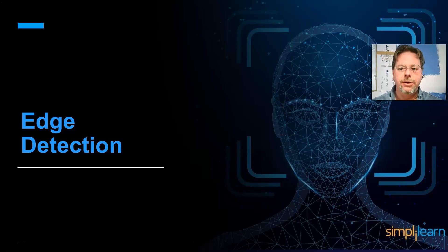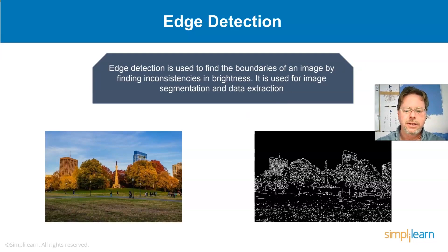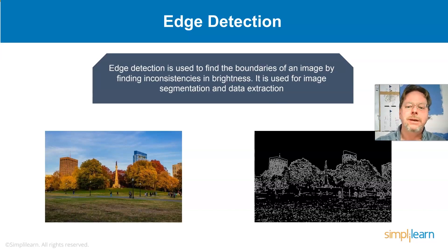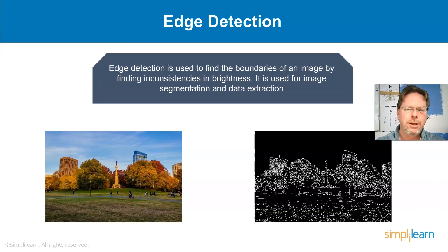Edge detection, just like thresholding, is another tool we can use to bring out an image. We can find the boundaries of an image by consistency and brightness, and it's used for image segmentation and data extraction. You can see with this image of buildings how powerful it is to pull the whole sky out. Edge detection has a lot of cool uses when you're processing images and pulling them apart.